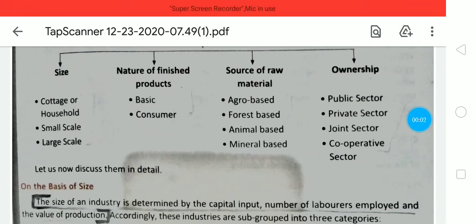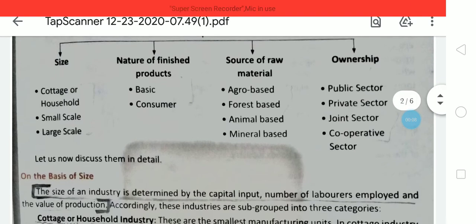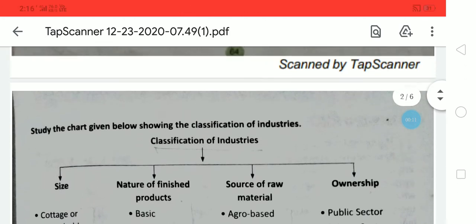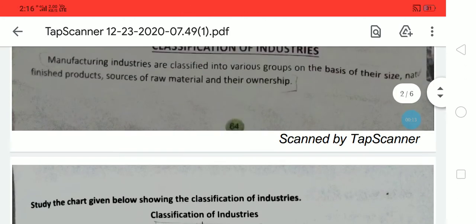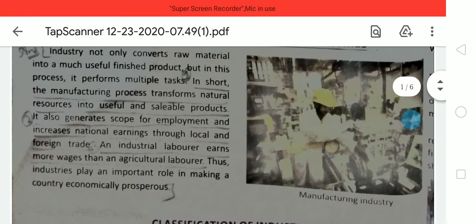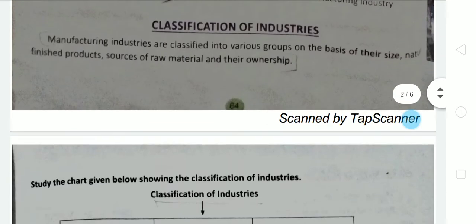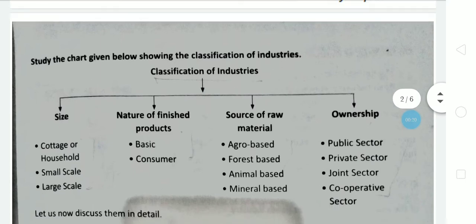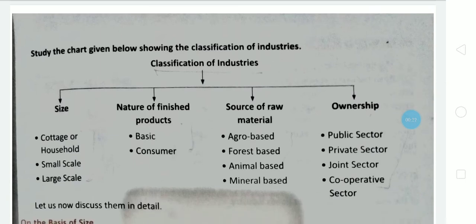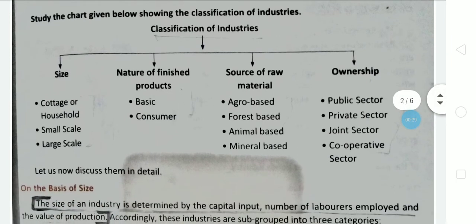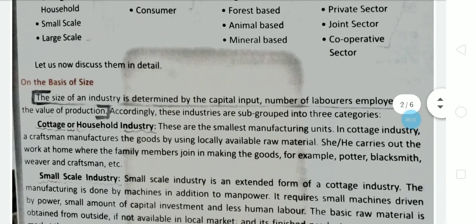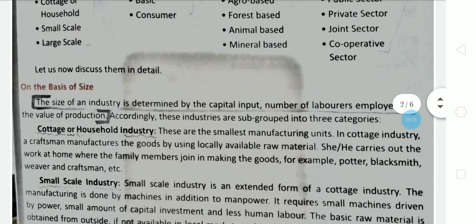Good morning, welcome to your SST class. Today I am continuing Chapter 6 of Geography, that is the Manufacturing Industry. In my previous video I explained what is industry, what is the importance of industry, and also the classification of industry on different bases like size, nature of finished product, sources of raw material, and ownership.